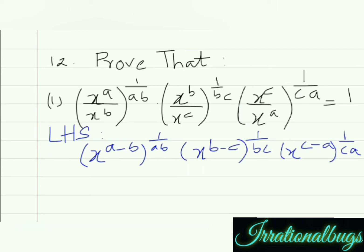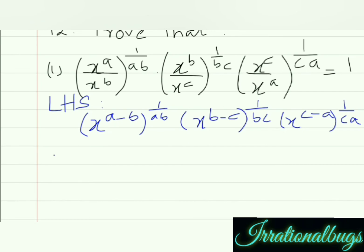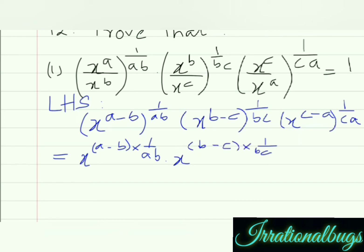Now, power law use कर रहे हैं — x एक base है जिस पर दो powers work कर रही हैं: a minus b and 1 upon ab. Same base पर दो powers होती हैं तो multiply होता है. So, x raised to the power (a minus b) multiplied by 1 by ab. Similarly, x raised to the power (b minus c) multiplied by 1 by bc. And x raised to the power (c minus a) multiplied by 1 upon ca.